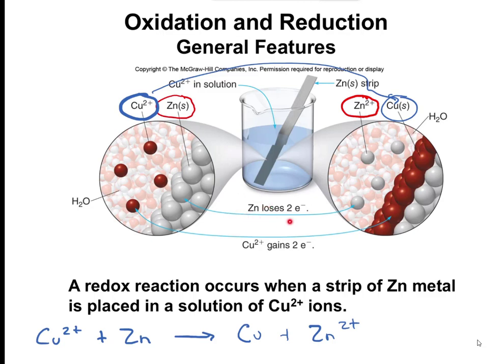Zinc loses two electrons. Your solid zinc has zero charge — if it doesn't show a charge, it means it has zero charge. It's going from a charge of zero to 2+. We're always gaining or losing electrons, not protons. So in order to go from a charge of zero to a charge of 2+, you have to lose two electrons. By losing an electron, your charge becomes more positive, so zinc loses two electrons going to Zn²⁺.